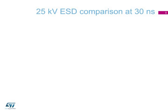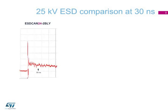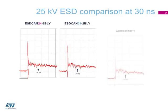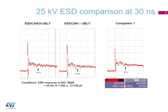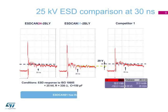The same tests have been done on the three products at 25 kilovolts, a much higher stress than the standard. In this case, the clamping voltage after 30 nanoseconds is higher than 40 volts and the difference between the three products is bigger. The ESD CAN 01 clamping voltage is 20 volts lower than the competitor's, confirming that the ESD CAN 01 has the lowest clamping voltage.